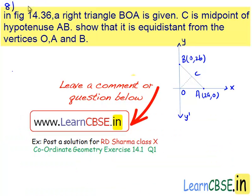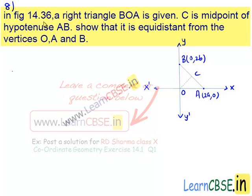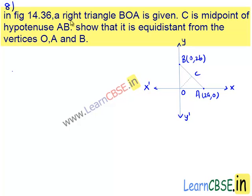Chapter 14, Exercise 14.4. Let's see the 8th question. In figure 14.36, a right triangle BOA is given. C is the midpoint of hypotenuse AB. Show that it is equidistant from the vertices O, A and B.